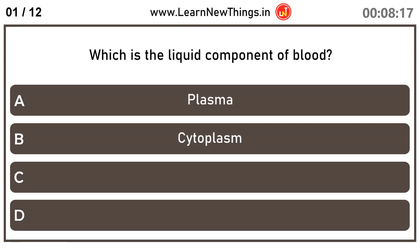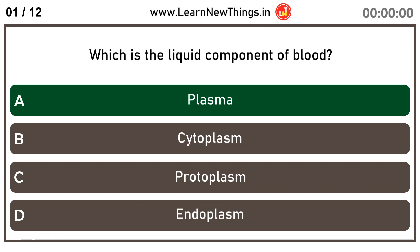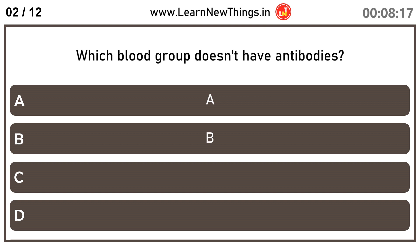Which is the liquid component of blood? Plasma. Which blood group doesn't have antibodies? AB.